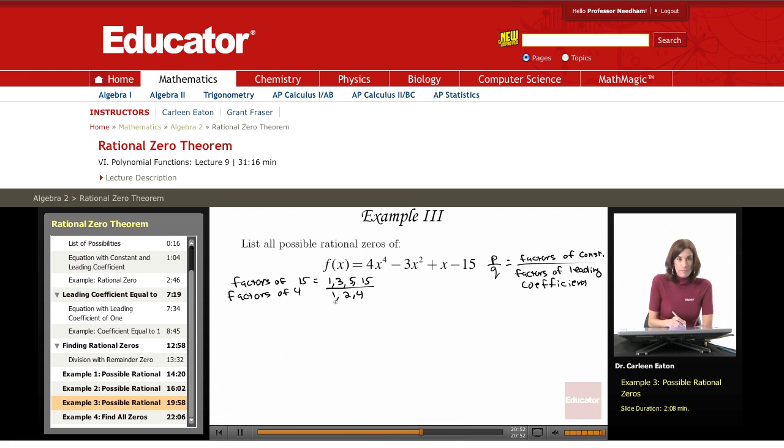So I need to figure out all these possibilities and use positive and negative for each. So 1 over 1, that's plus or minus 1. And then 1 over 2, plus or minus 1 half. 1 over 4, plus or minus 1 fourth.